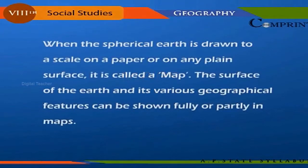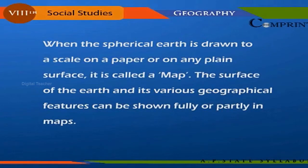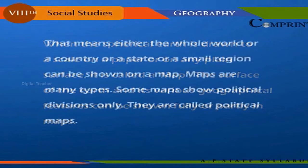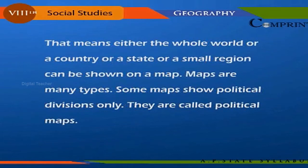When the spherical earth is drawn to scale on a paper or on any plane surface, it is called a map. The surface of the earth and its various geographical features can be shown fully or partly in maps — either the whole world, or a country, or a state, or a small region can be shown on a map.